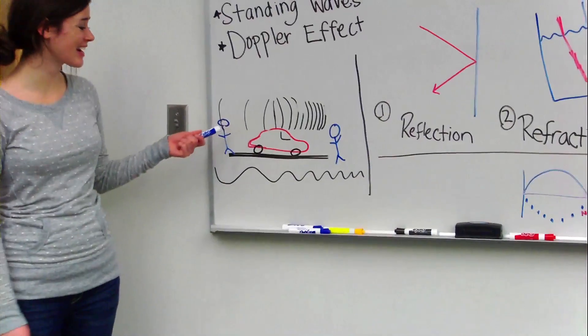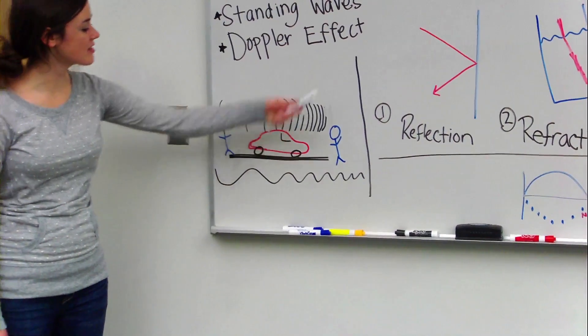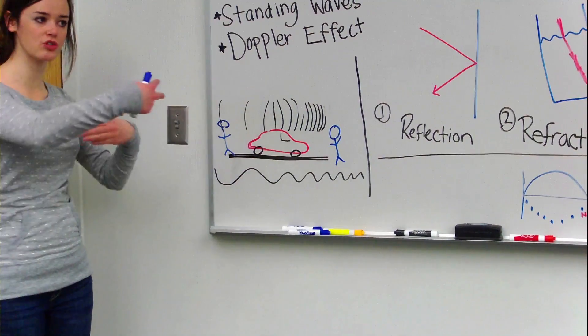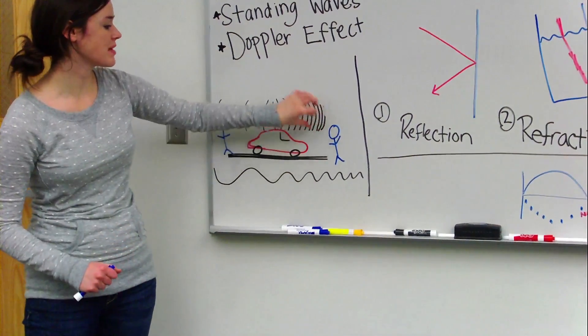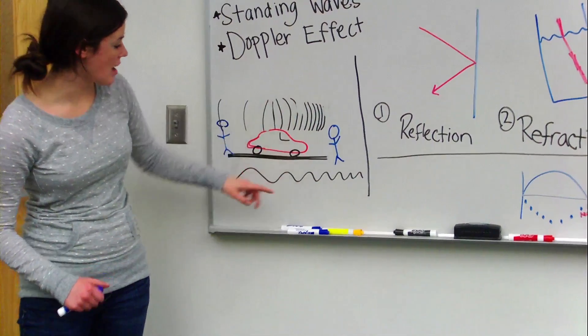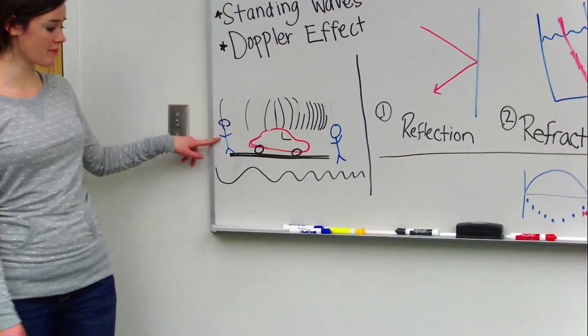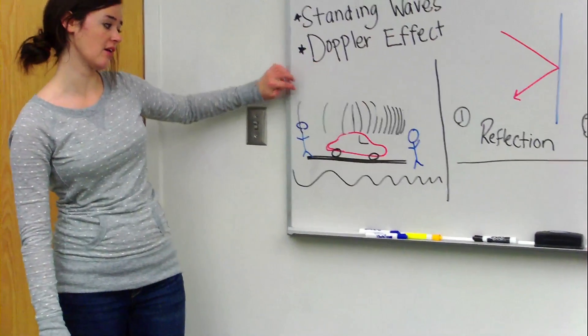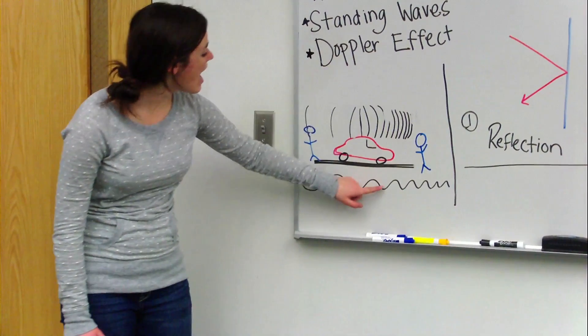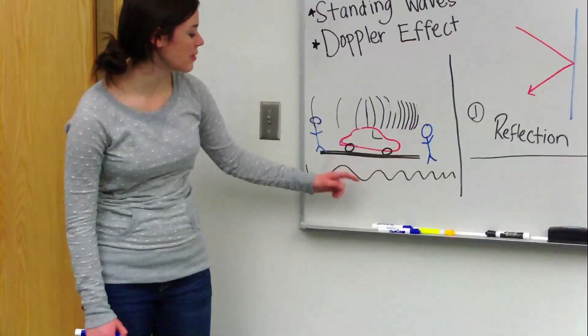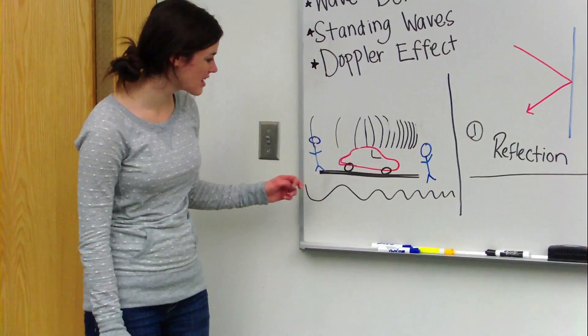Doppler effect is our last thing we're going to cover, and that's as an object is moving towards you, these waves travel towards this person, they become compressed. And then as it's traveling away from this guy, they're becoming spread out. So, these compressed waves have a really high frequency, and these spread out waves have a low frequency.